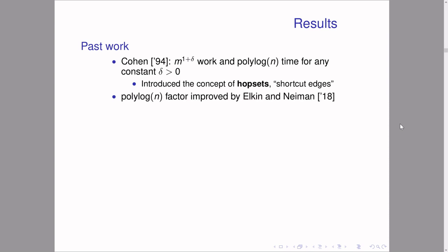This hopset-based algorithm was improved recently by Elkin and Neiman, but it still runs in m to the 1+delta work. Until now it was still open whether there's a parallel algorithm running in m·polylog work and polylog time, which is important because this is usually what we consider a truly work-efficient algorithm — within polylog factors of optimal.